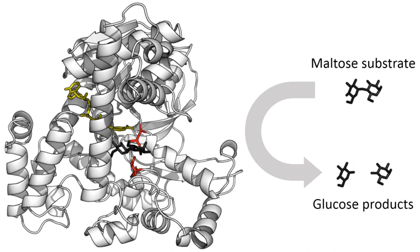Michaelis-Menten kinetics relies on the law of mass action, which is derived from the assumptions of free diffusion and thermodynamically driven random collision. Many biochemical or cellular processes deviate significantly from these conditions because of macromolecular crowding and constrained molecular movement. More recent, complex extensions of the model attempt to correct for these effects.